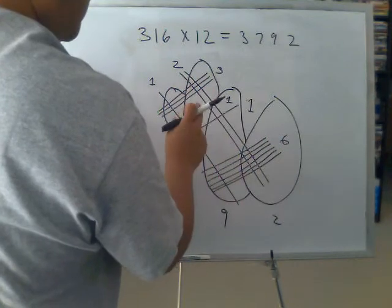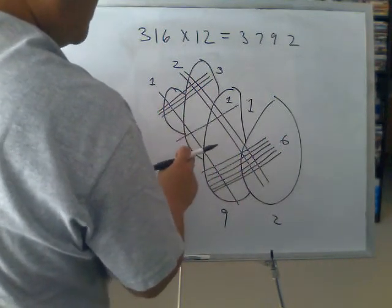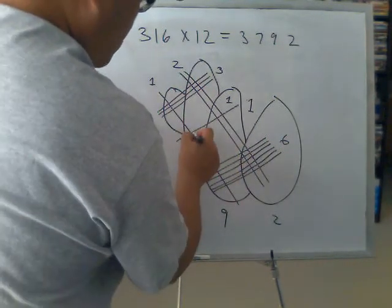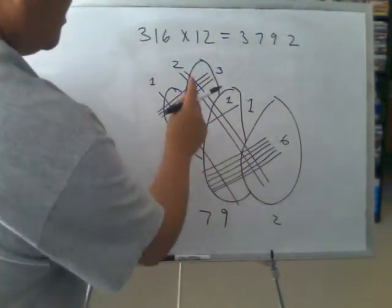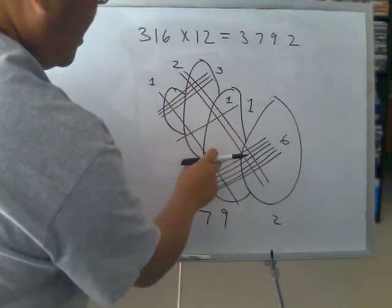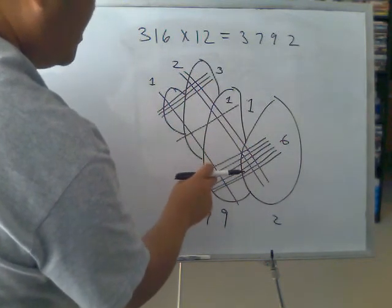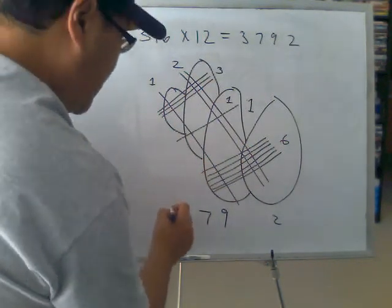And we count the next middle number, which is one, two, three, four, five, six, seven. We have seven intersections in the left middle, for the left middle digit.